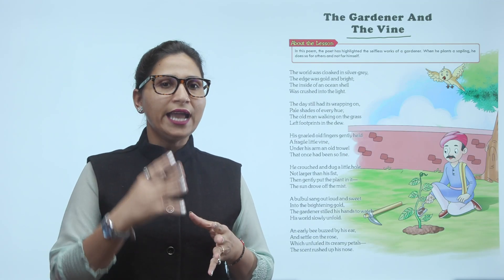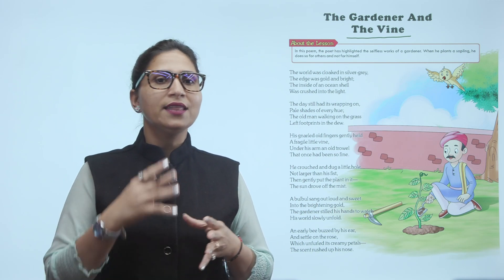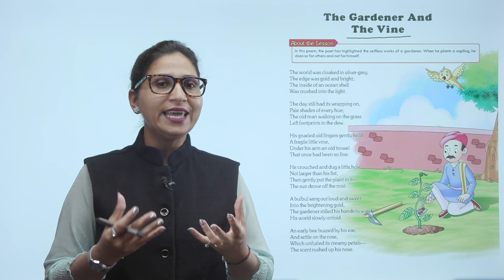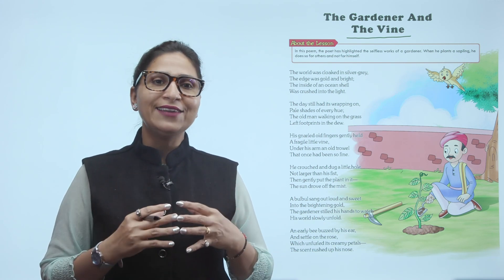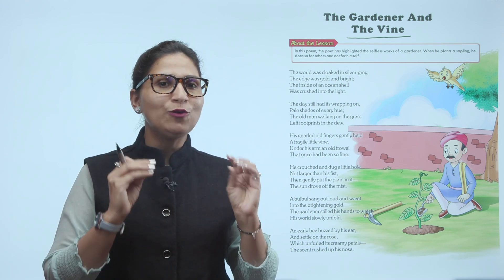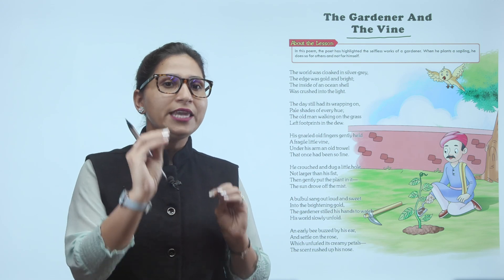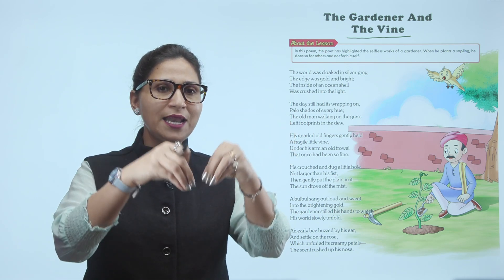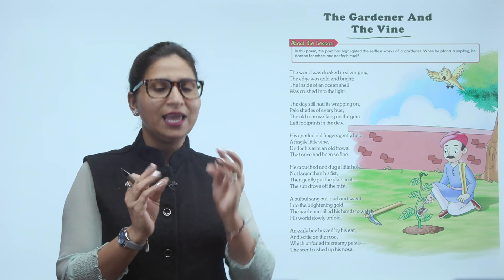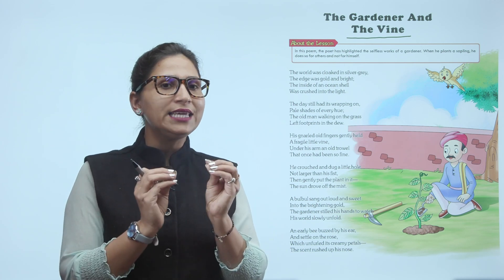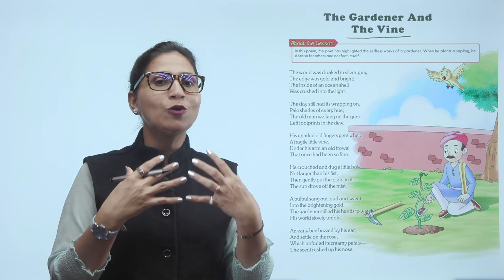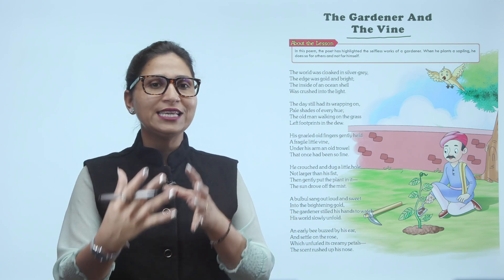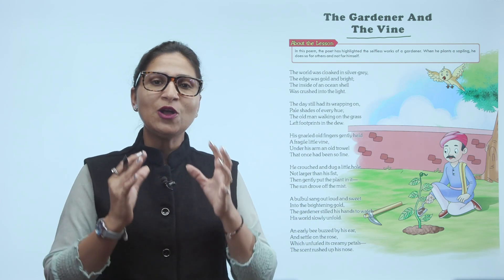An early bee burst by his ear and settled on the rose, which unfolded his creamy petals. The scent rushed up his nose. Yaha bata ho raha hai kis tarah se yeh hai — sound of bee — aur jo rose hai, woh rose settle ho chuka hai. Matlab rose par bee aa kar baith jaati hai, aur jo creamy petals hote hain rose ki — matlab jinko hum dekhte hain na soft petals — unki patiyan kaisi hain? Kaafi soft hain. Aur wahan se kaisi acchi acchi scent ki khushbu aa rahi hai jo uske mehka rahi hai. Jo dekh raha hai gardener, toh woh dekh raha hai ki rose, bee, aur kis tarah se usko scent ki, jo fragrance ki khushbu hai, woh bhi usko wahan par aa rahi hai.